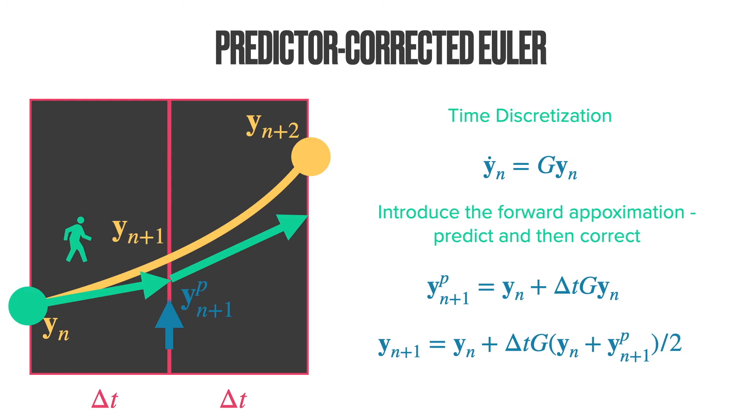So, what does the predictor-corrected Euler do? What it does is, we make a prediction using the forward Euler method, which is simply the first equation, and then using this prediction to correct the solution using a simple averaging scheme. So, we can extend this methodology of correcting the solution using multiple steps.